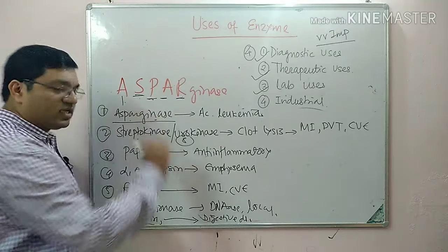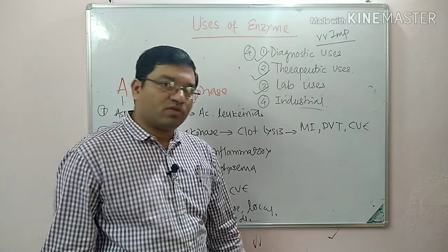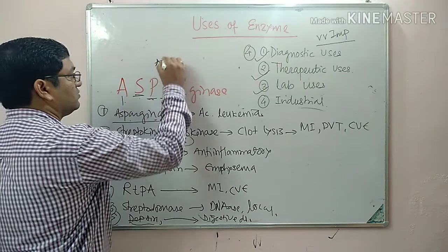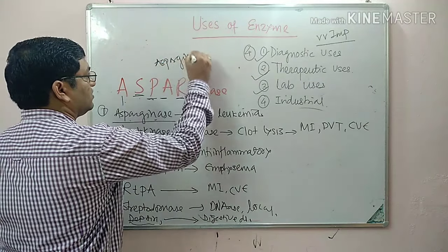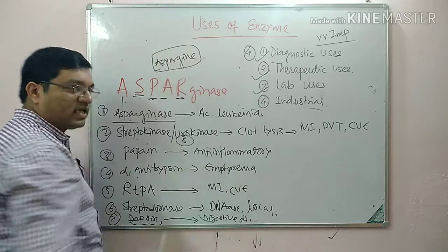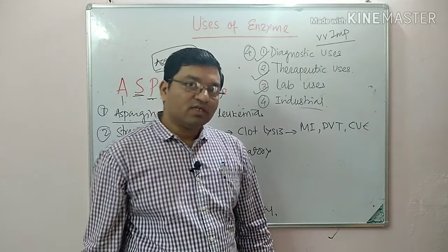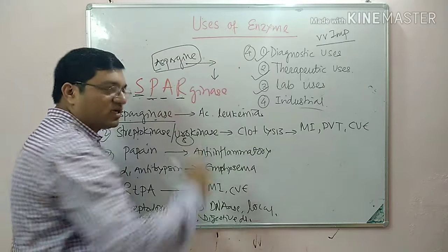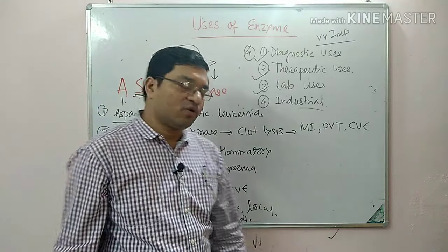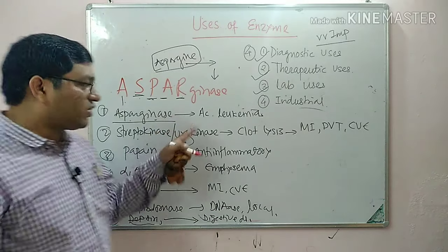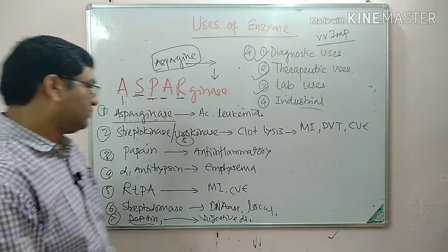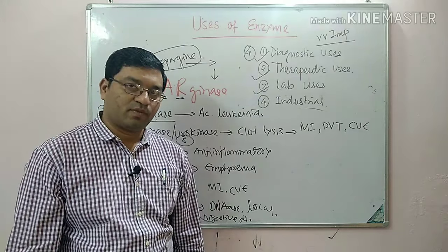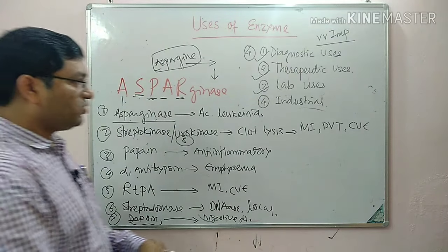The mechanism of action of asparaginase: it utilizes asparagine, and tumor cells use asparagine as a substrate. Asparaginase depletes asparagine, decreases its level, and inhibits cell growth — that is why it is used in acute lymphoblastic leukemia. These are the therapeutic uses of enzymes.